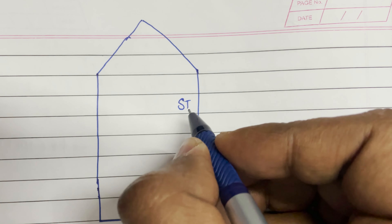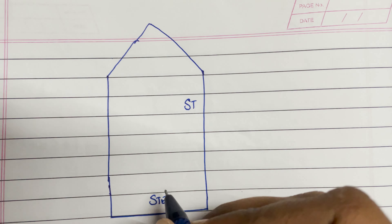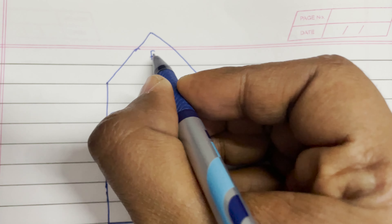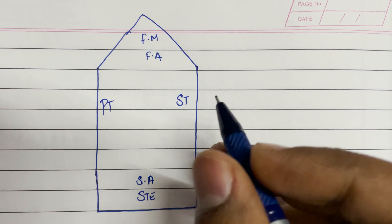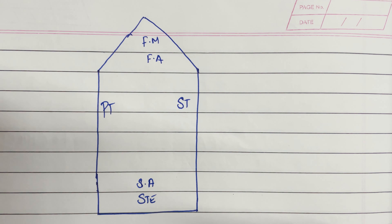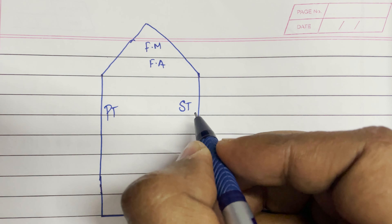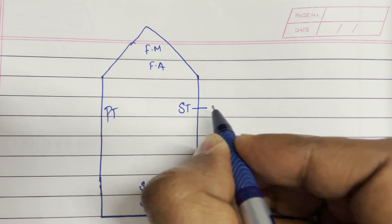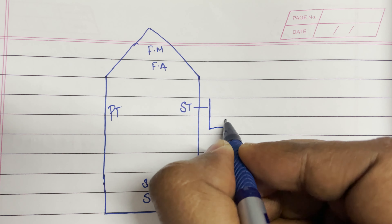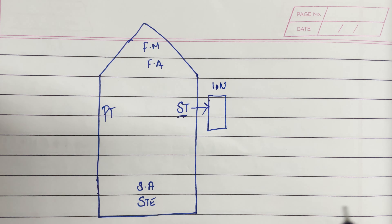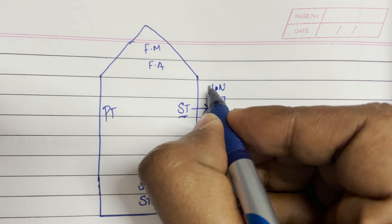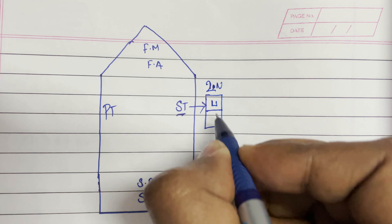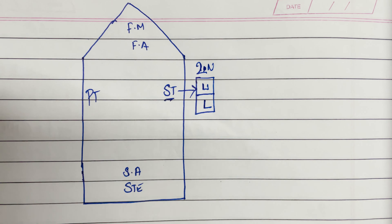As we all know, on our ships we have starboard navigation light, stern navigation light, port navigation light, and forward mast navigation light, among other navigation lights. The point I wanted to emphasize is that there is not just one light on each side — we always have two navigation lights: one upper light and one lower light.